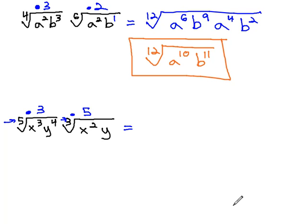And again, as we do that, we're going to multiply both the index and the exponents by that same value to get everything under that fifteenth root, that common index. For the x's, 3 times 3 is 9, and for the y's, 3 times 4 is 12.